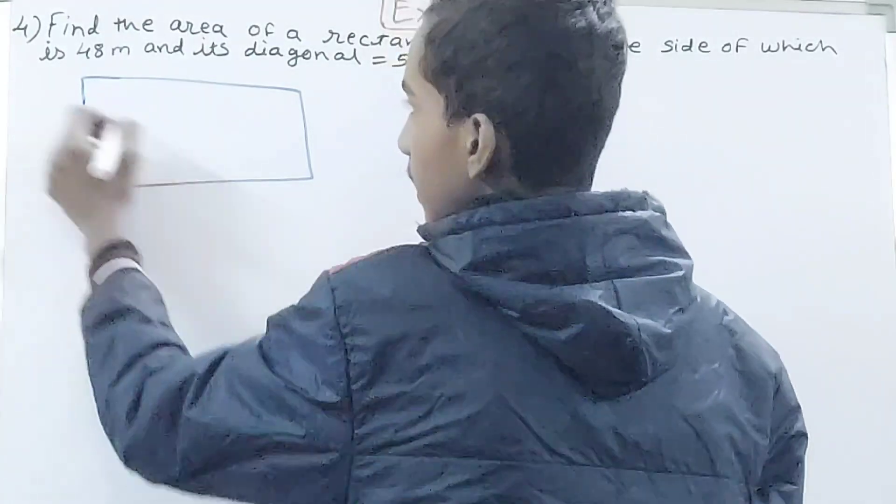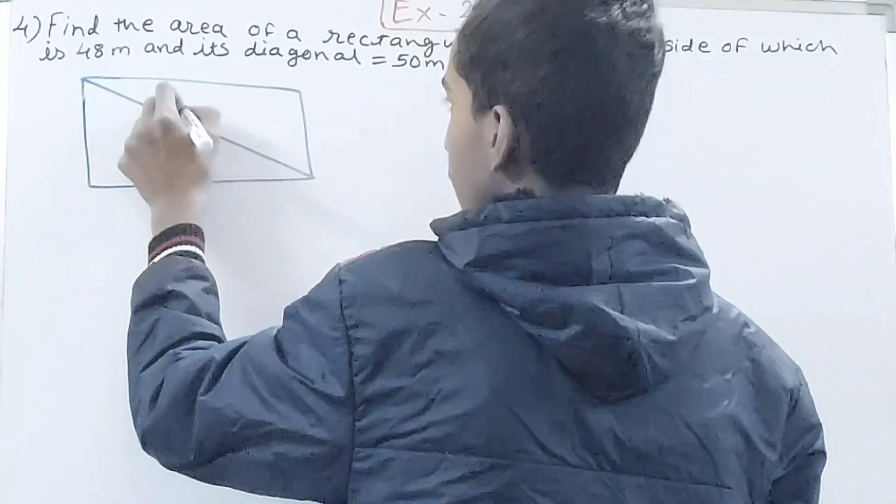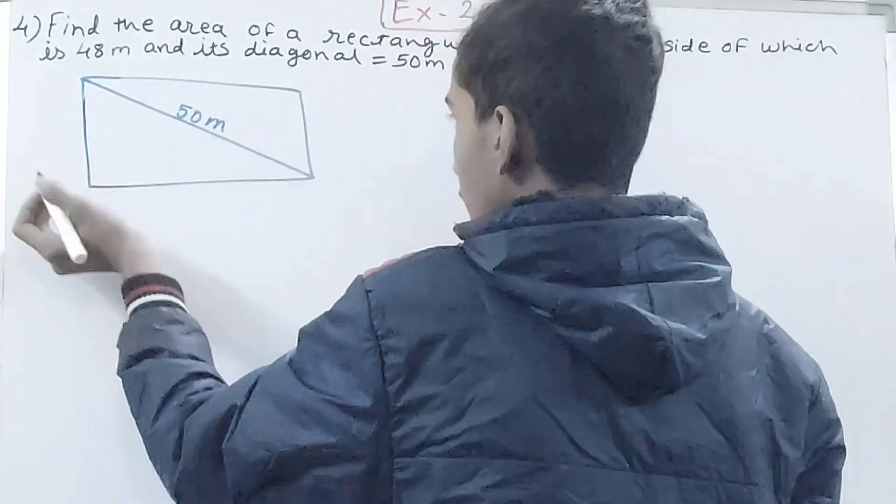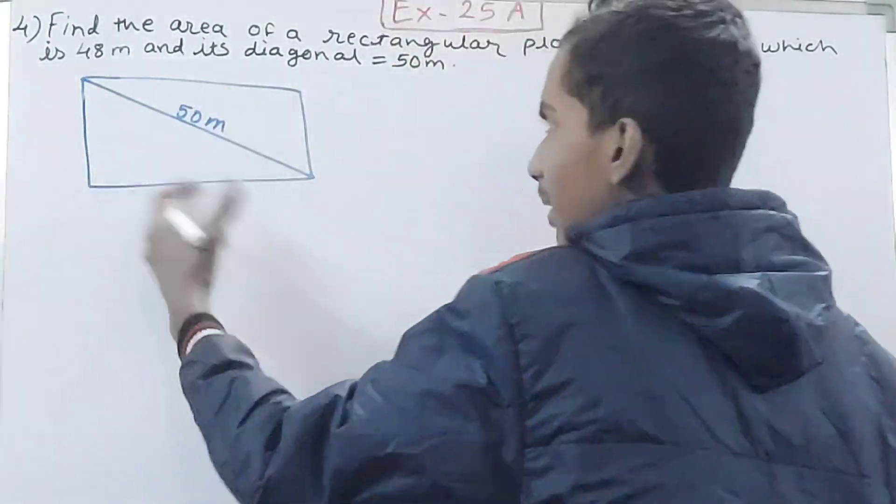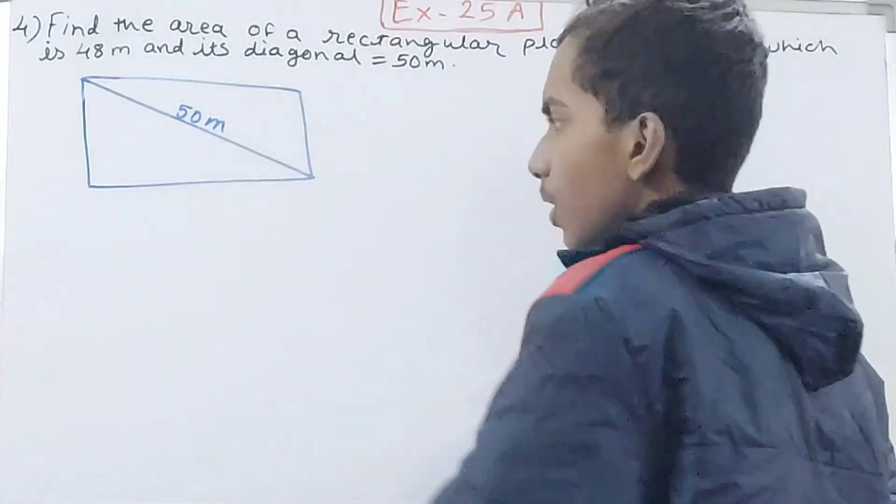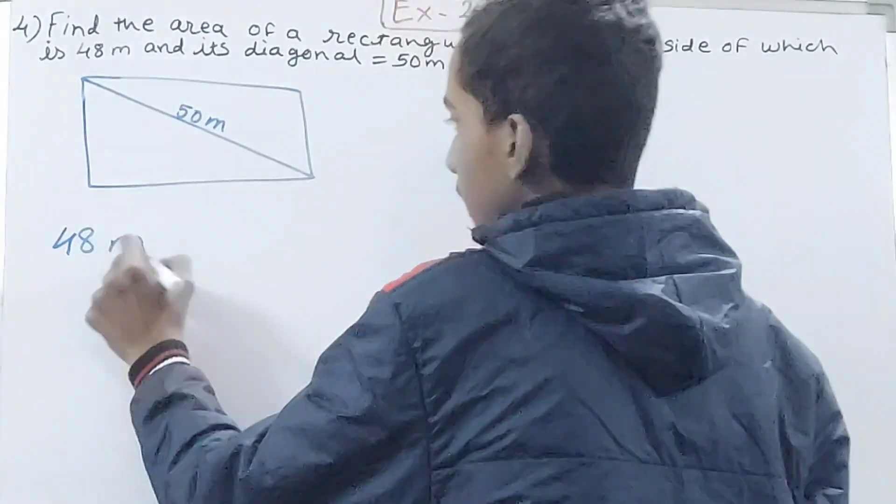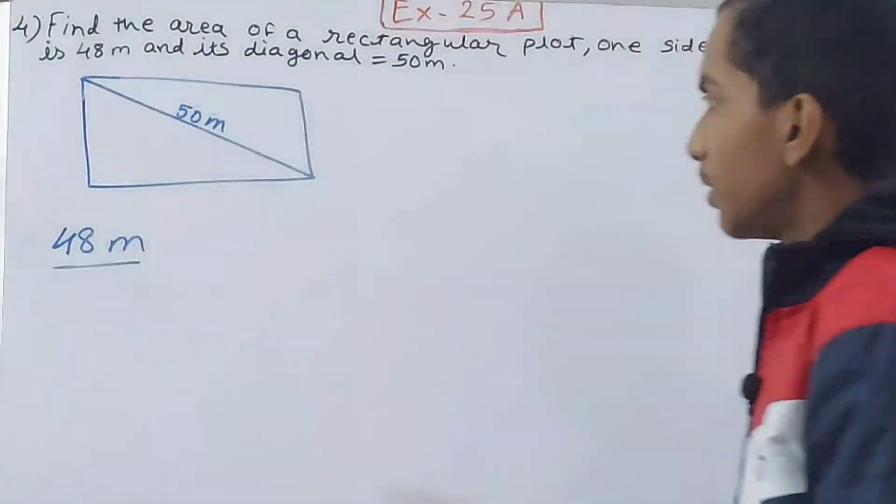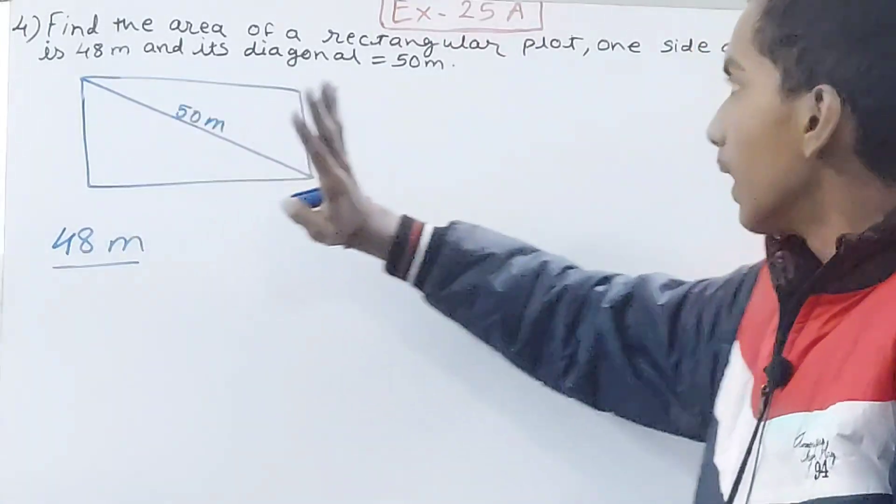In this rectangular plot, the diagonal is 50 meters. One side, it can be any of these sides, is 48 meters. So it can be this or this or this or this, anything.